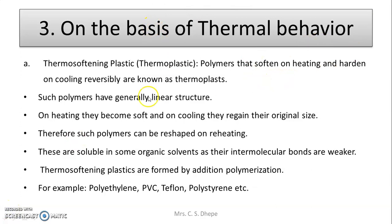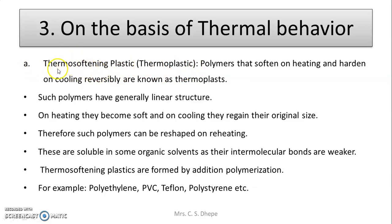On the basis of thermal behavior, the first type is thermosoftening plastic, or thermosoftening polymer. These are the polymers that soften on heating and harden on cooling reversibly, and are known as thermoplast. The name itself indicates: thermo means heat, soft means on heating it becomes soft, and on cooling it becomes hard — that polymer is called thermosoftening plastic or thermosoftening polymer.